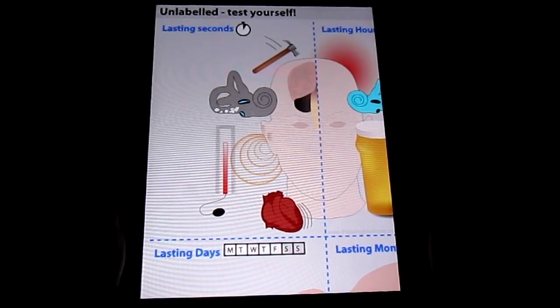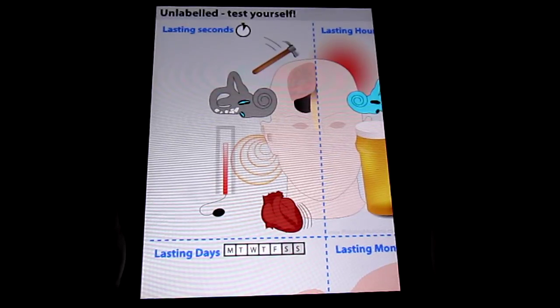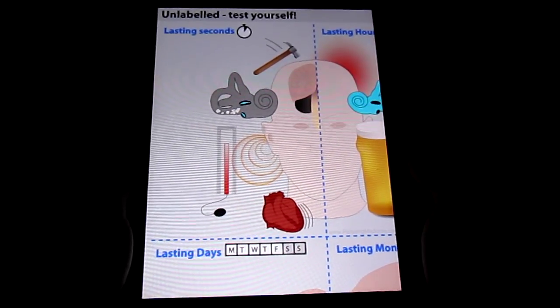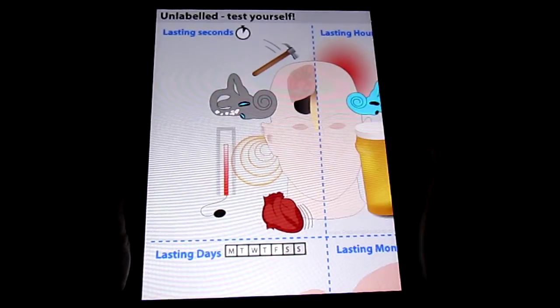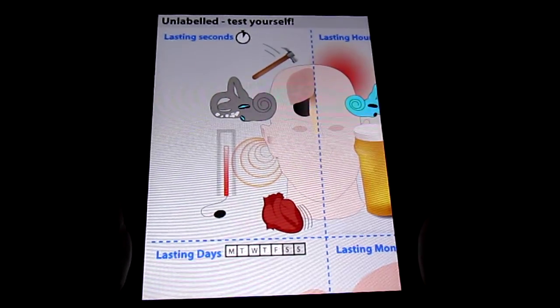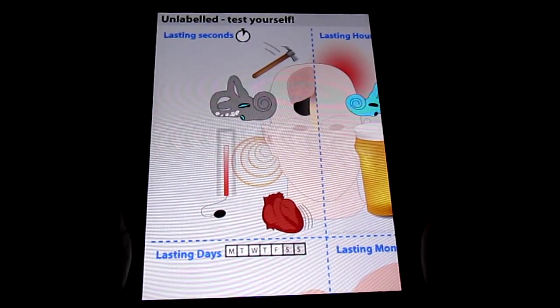Another more common cause is post-concussion vertigo, and the hammer here hitting the head reminds us to consider that as a potential cause of vertigo lasting for a few seconds.